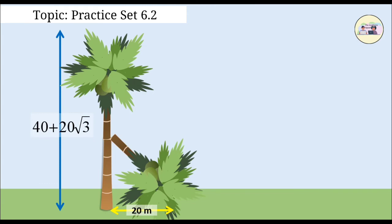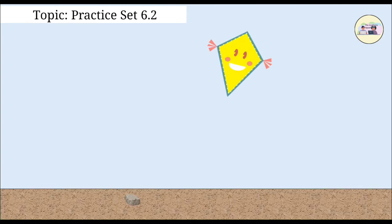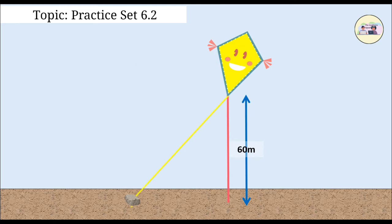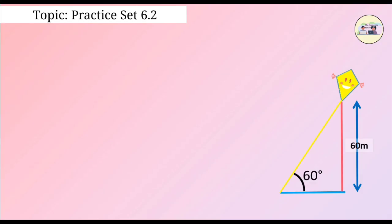Question 6. A kite is flying at a height of 60 meters above the ground. The string attached to the kite is tied at the ground and makes an angle of 60 degrees with the ground. Assuming that the string is straight, find the length of the string. Assume root 3 is equal to 1.73.